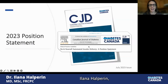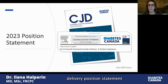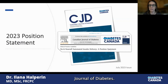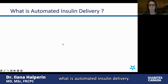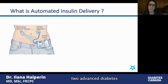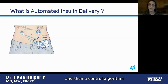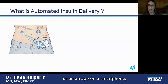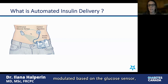I'm Dr. Alana Halperin and I'm really excited to be here today to talk about our new do-it-yourself automated insulin delivery position statement that will be out in the July 2023 issue of the Canadian Journal of Diabetes. So let's start by talking about what is automated insulin delivery. Automated insulin delivery utilizes two advanced diabetes technologies: continuous glucose monitoring and an insulin pump. A control algorithm, which can be embedded within the pump itself or on an app on a smartphone, is used to have the insulin modulated based on the glucose sensor.